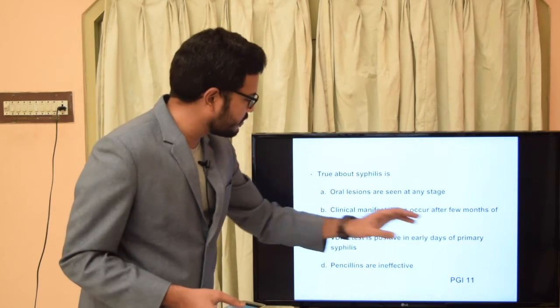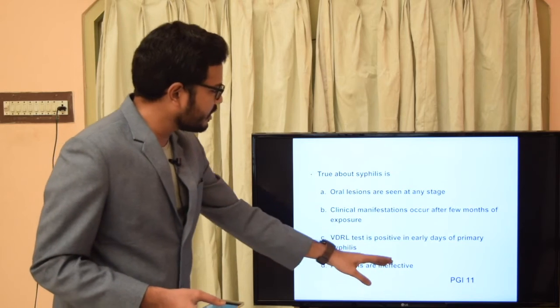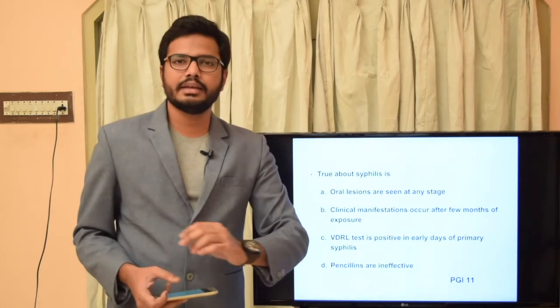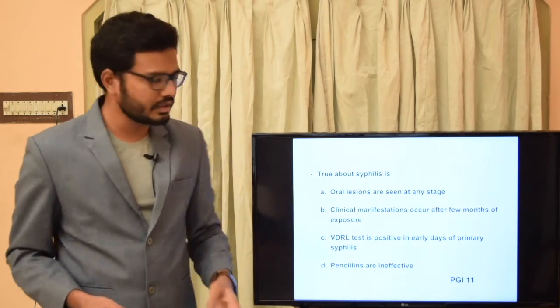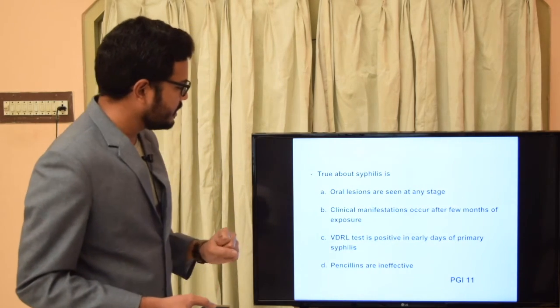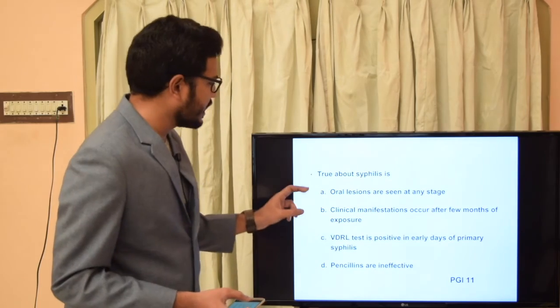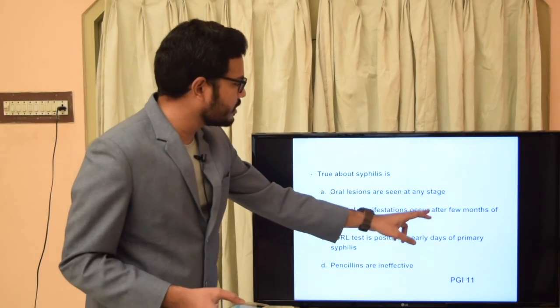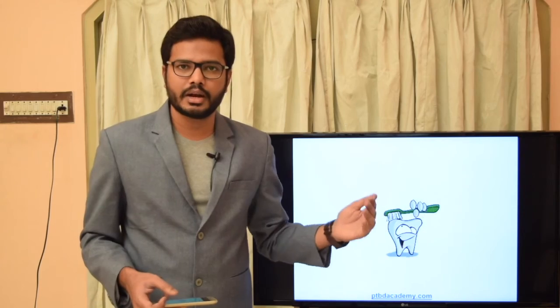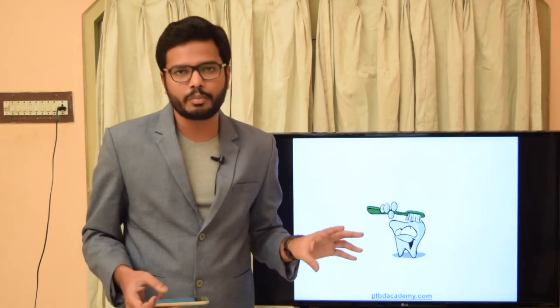True about syphilis: oral lesions are seen at any stage; clinical manifestations occur after a few months of exposure; VDRL test is positive in early primary syphilis; or penicillins are ineffective? The true statement is that oral lesions are seen at any stage — primary, secondary, or tertiary. The rest are false: penicillin is used to treat syphilis, VDRL is negative in early stages, and clinical manifestations occur immediately after exposure. These are important points for entrance exams.